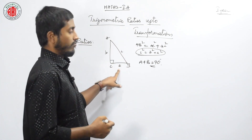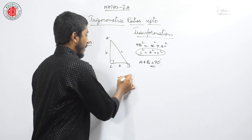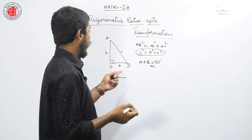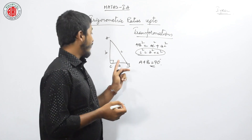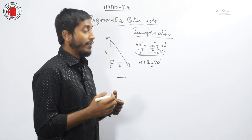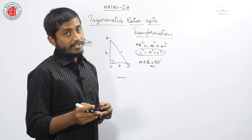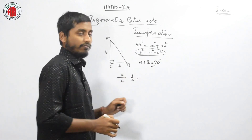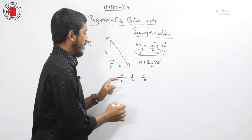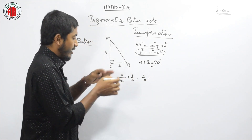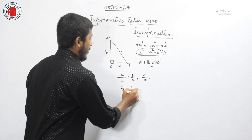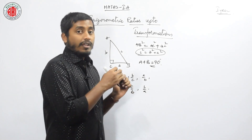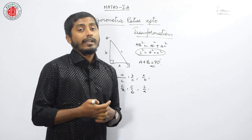Here there are three sides and we have two places — numerator and denominator. We are discussing the ratios of trigonometry. With two places and three variables, how many combinations may we get? We can get six combinations. What are those? A/C, B/C, and A/B — these are three basic combinations. Then their reciprocals: C/A, C/B, and B/A. These six different combinations of ratios we can get in a given triangle.